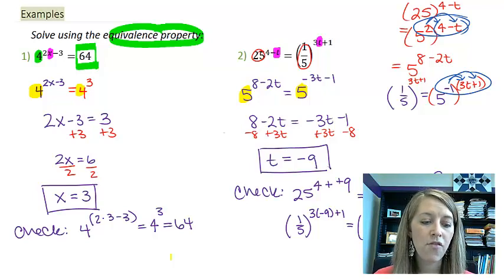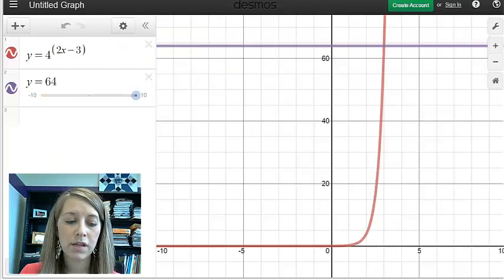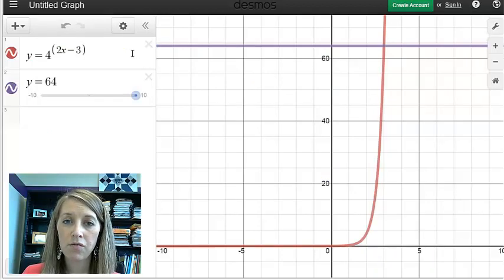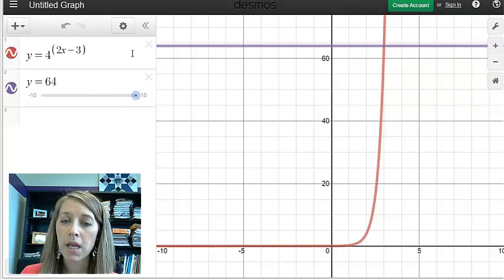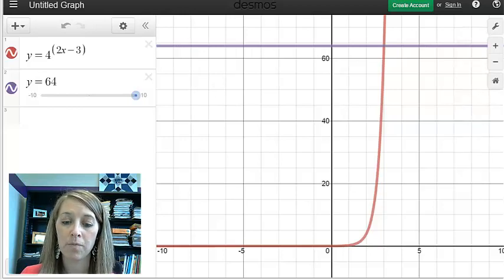So I'm going to do example one: 4 to the 2x minus 3 is equal to 64. And so the way that you do this is you type the left-hand side of your equation into one y equals, and you type the right-hand side of your equation into the other y equals. So my left hand is 4 to the 2x minus 3, and you can see that's graphed by the red line here. The right-hand side was just 64, so you can see that's a constant, so that's graphed in this purple line right here.